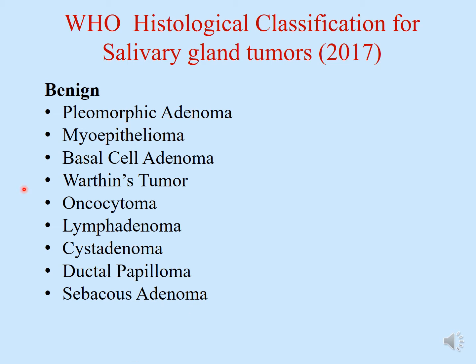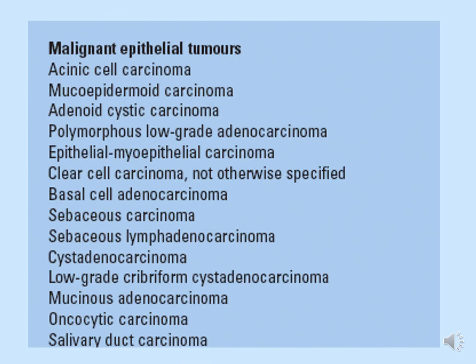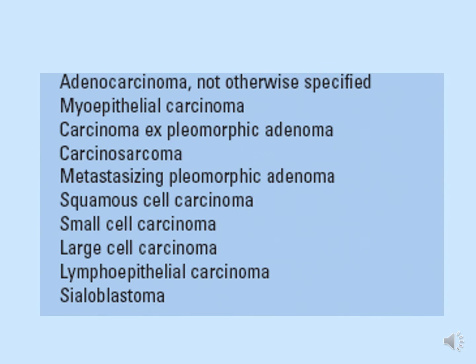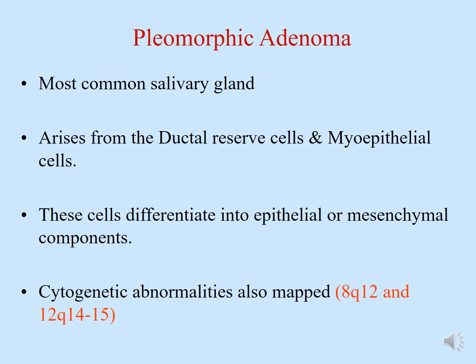Out of the benign tumors, we will be stressing on pleomorphic adenoma and Warthin's tumor. In terms of malignant epithelial tumors of the salivary gland, we have acinic cell carcinoma, mucoepidermoid carcinoma, adenoid cystic carcinoma, polymorphous low-grade adenocarcinoma, epithelial-myoepithelial carcinoma, clear cell carcinoma, basal cell adenocarcinoma, sebaceous carcinoma, cystadenocarcinoma, and others. We will focus mainly on mucoepidermoid carcinoma, acinic cell carcinoma, and adenoid cystic carcinoma.